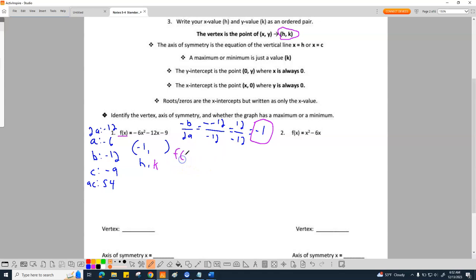F of negative 1. If you don't know what that means, it means instead of writing x, you're going to write a negative 1 every time you see an x. So there's my negative 1 squared minus 12 times negative 1 minus 9.